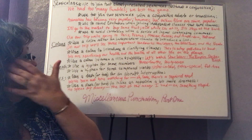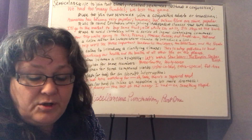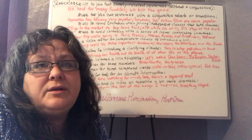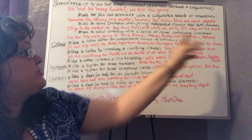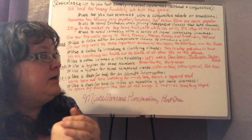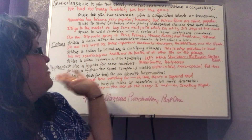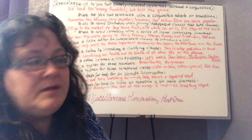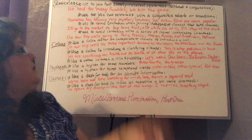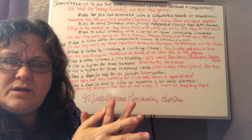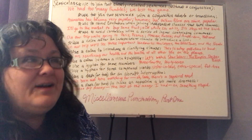Next: use a colon to introduce a clarifying clause. This is where it gets a little muddy because you could use a semicolon or a colon. A colon means 'and this is what it is — look at this.' For example: 'This is why pollution is bad: we're sacrificing our health and the health of all other life on the planet.' The colon is used because I'm pointing out something. Compare that to the semicolon example — 'we had too many fumbles; we lost the game' — that doesn't really work with a colon. I hope you're seeing the nuance — the slight difference there.